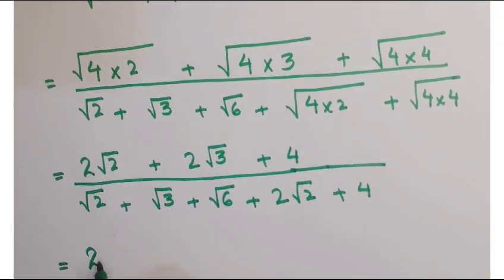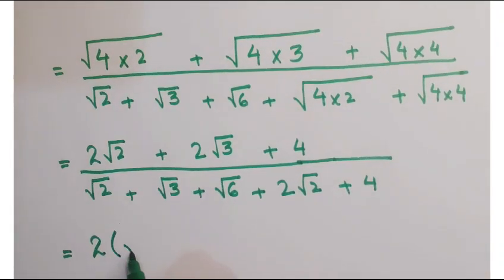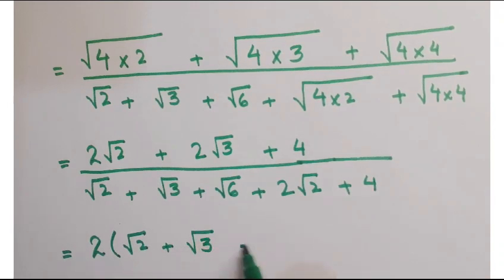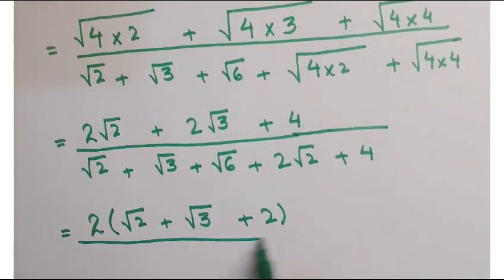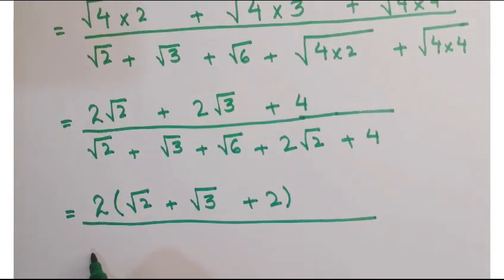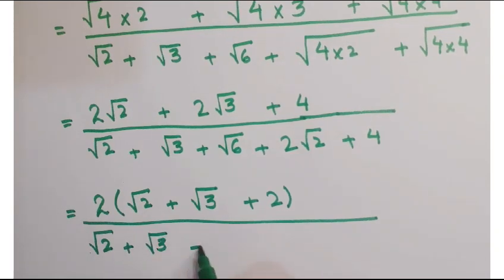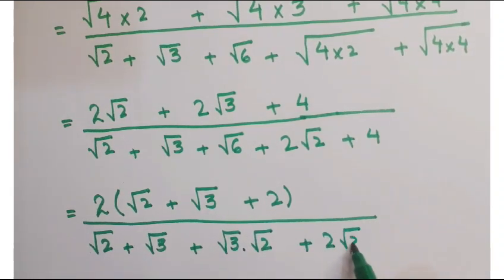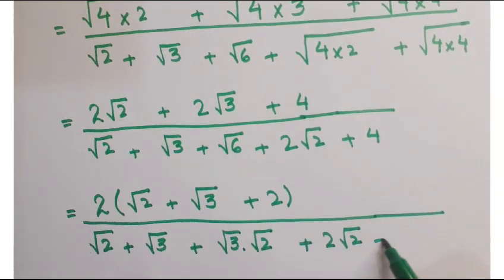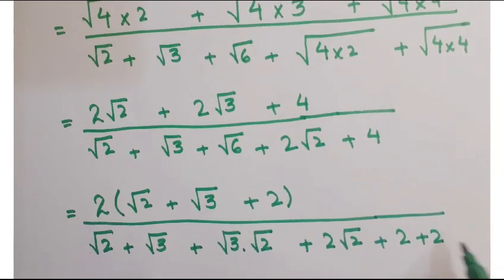Take out 2 common in the numerator, so you get 2(√2 + √3 + 2) in the numerator. In the denominator, write √6 as √3 × √2, and split the 4 as 2 + 2.